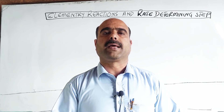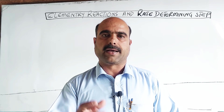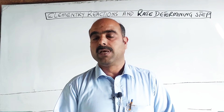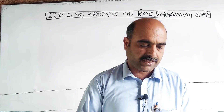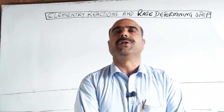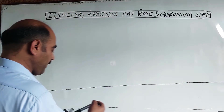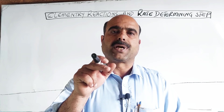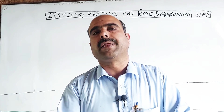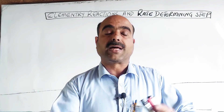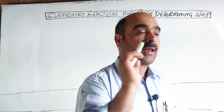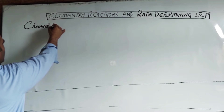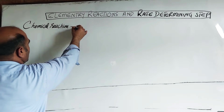In our previous video on chemical kinetics, we studied the rate of reaction and the mechanism of chemical reaction, and factors affecting the rate of chemical reaction. Now regarding the mechanism — a chemical reaction always completes in many steps. A chemical reaction does not complete in a single step despite the balanced chemical equation showing a stoichiometric ratio of moles of reactants to moles of products.